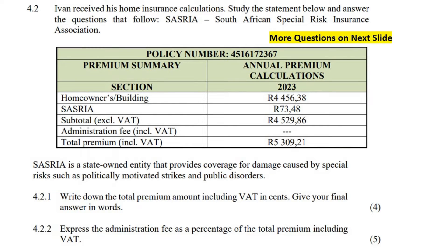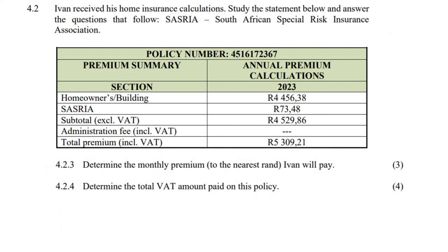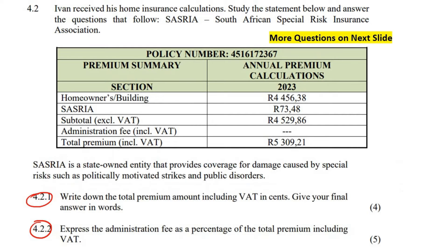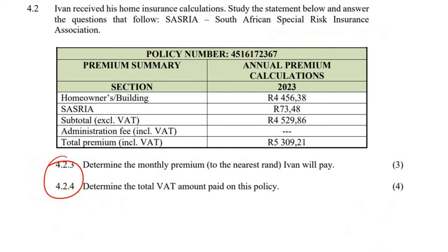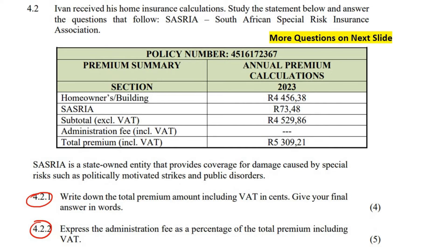With this question, we do have a few more questions on the next slide. So here we've got this one and this one, and then we've got these two over here. Some decent questions here: four marks, five marks, three marks, four marks. Ivan received his home insurance calculations — study the statement below and answer the questions that follow.